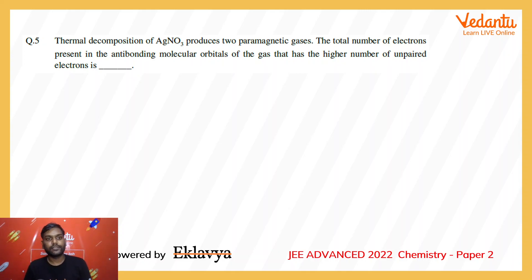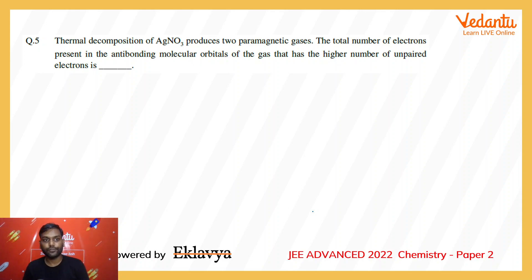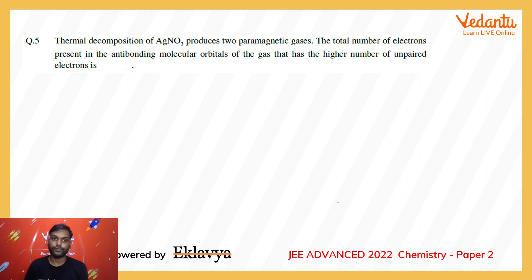The next question is: thermal decomposition of silver nitrate produces two paramagnetic gases. The total number of electrons present in the anti-bonding molecular orbitals of the gas that has the higher number of unpaired electrons — find that.